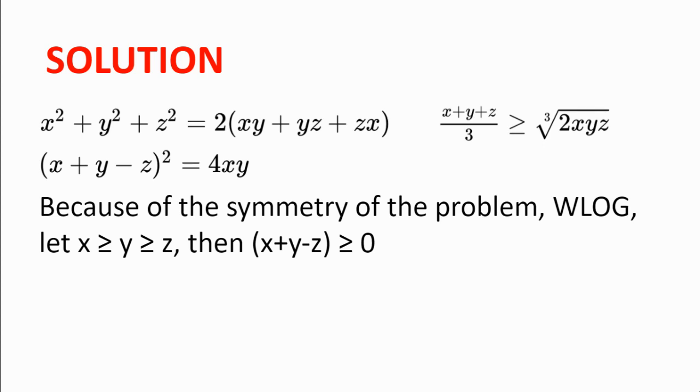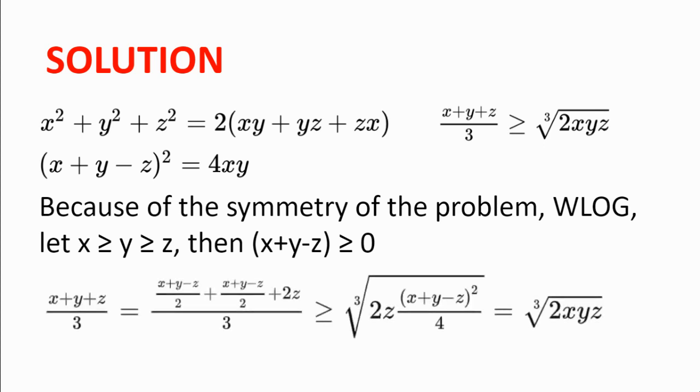And so now we are dealing with non-negative reals, and so we have (x + y + z)/3 = [(x + y - z)/2 + (x + y - z)/2 + 2z]/3 ≥ ∛[2z · (x + y - z)²/4] = ∛(2xyz).